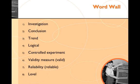An investigation is an experiment. A conclusion is the outcome of the experiment, and that includes the original testable question. A trend is the overall direction of a data path, so that could be a positive or a negative or a neutral trend. Logical means to be reasonable or to make use of reason and good sense. A controlled experiment is an experiment in which only one variable changes, and all the others stay the same.